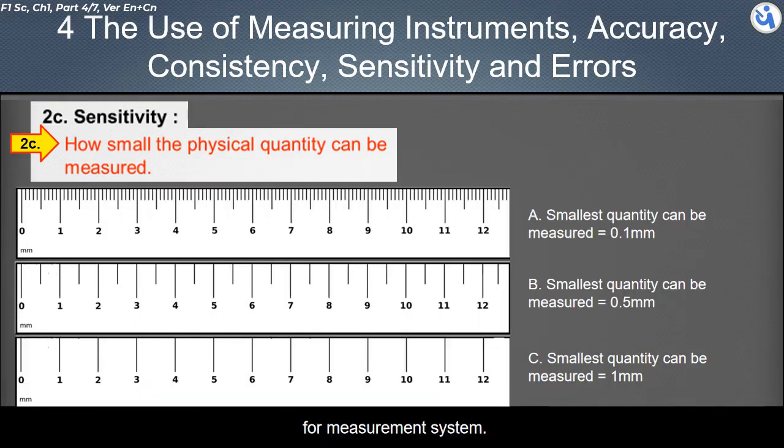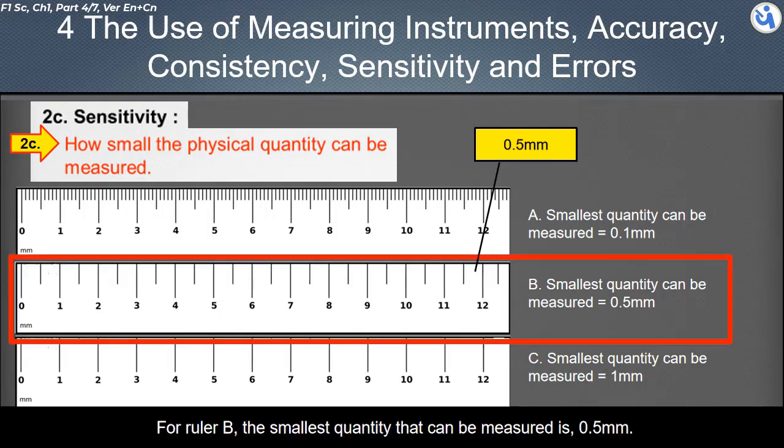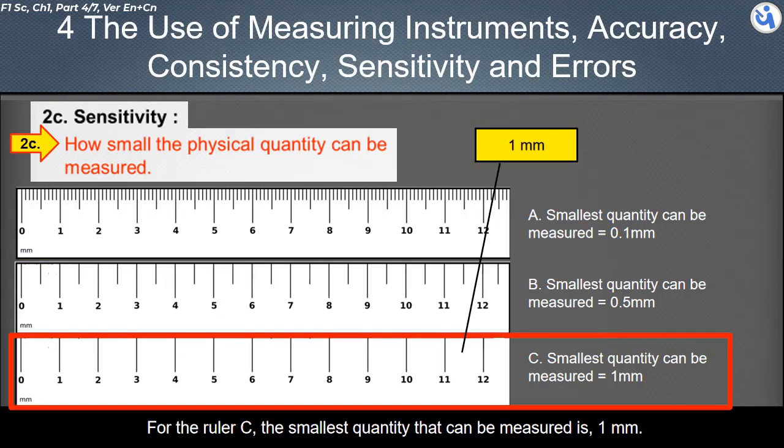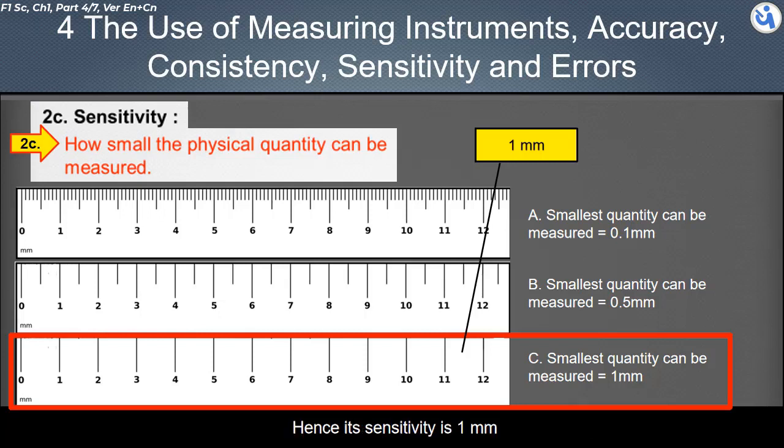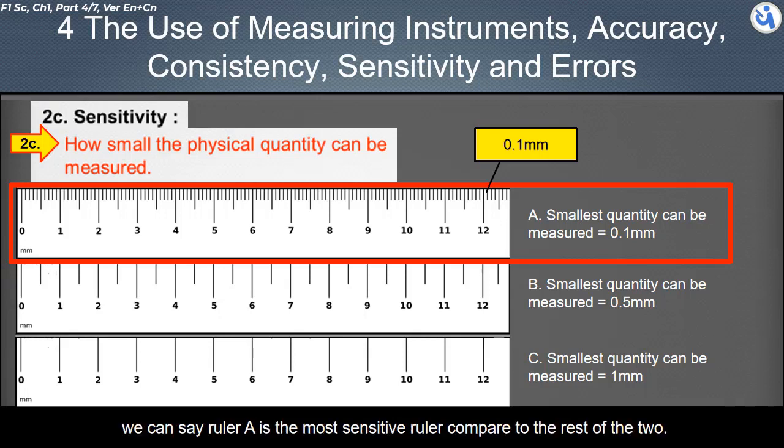For measurement system, ruler A, the smallest quantity for the measurement is 0.1 millimeters. Hence the sensitivity of ruler A is 0.1 millimeters. For ruler B, the smallest quantity that can be measured is 0.5 millimeters, hence its sensitivity is 0.5 millimeters. For the ruler C, the smallest quantity that can be measured is 1 millimeter, hence its sensitivity is 1 millimeter. Since ruler A can measure the smallest quantity, 0.1 millimeters, we can say ruler A is a sensitive ruler compared to the rest of the two.